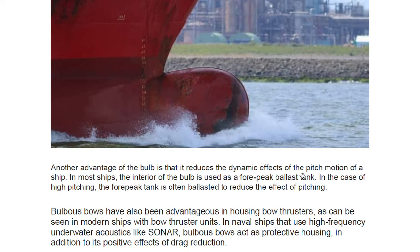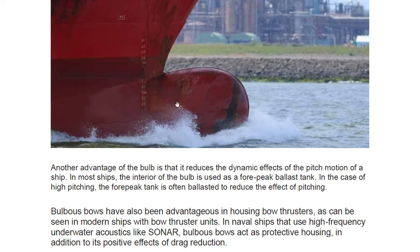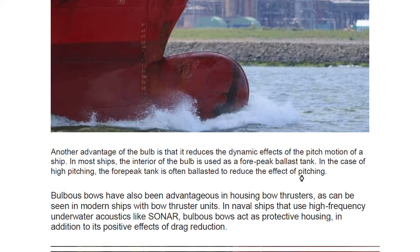Another advantage of the bulb is to reduce the dynamic effect of pitch motion of a ship. In most ships, the interior of the bulb is used as a forepeak tank and ballast tank. The collision bulkhead is located nearby, and only one penetration through the collision bulkhead is allowed — the pipeline for the forepeak tank. No other holes are permitted. In cases of high pitching, the forepeak tank is often ballasted to reduce the pitching effect.